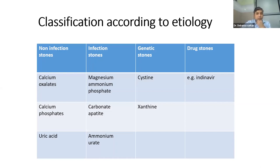You need to know the classification according to etiology. There are mainly two major types of stones: non-infection stones and infection stones, and two minor varieties — genetic stones, which are recurrent stone formers with multiple family members already affected, and drug stones like Indinavir, which is normally used in HIV patients.